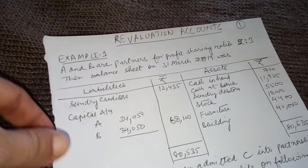Furniture is to be reduced by 10%. In the balance sheet, furniture is 4,400, so 10% of 4,400 equals 440. The third adjustment is a provision of 5% for doubtful debts on sundry debtors — provision is a credit, so revaluation account is debited. Debtors are 5,500, so 5% of 5,500 equals 275.